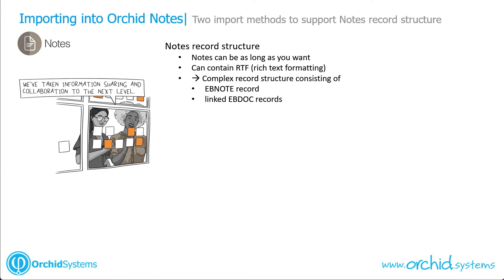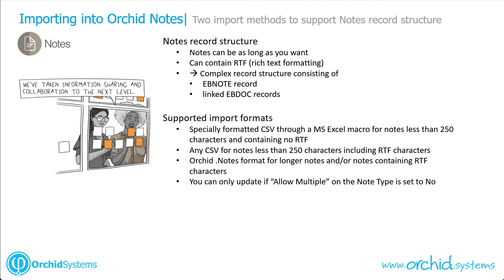Because of this, the standard Sage imports will not work on such a complicated record structure. So Notes supports two different import formats: a specially formatted CSV that you run through Microsoft Excel, designed for notes less than 250 characters long and without rich text formatting, and a dot notes format which allows you to import notes as long as you want with all the rich text formatting characters you need.